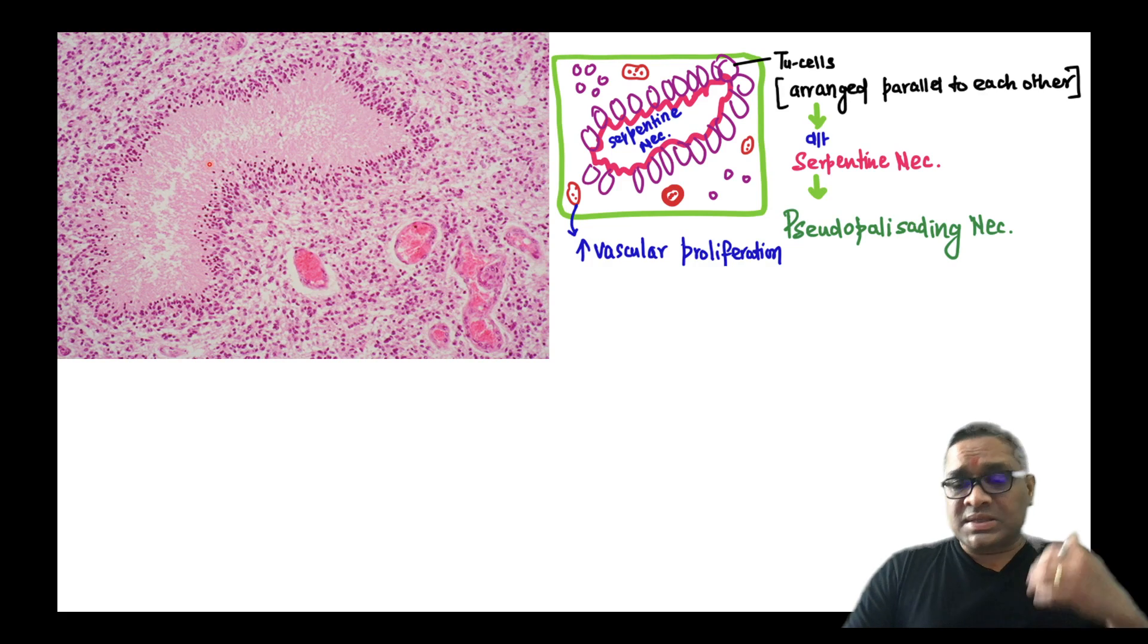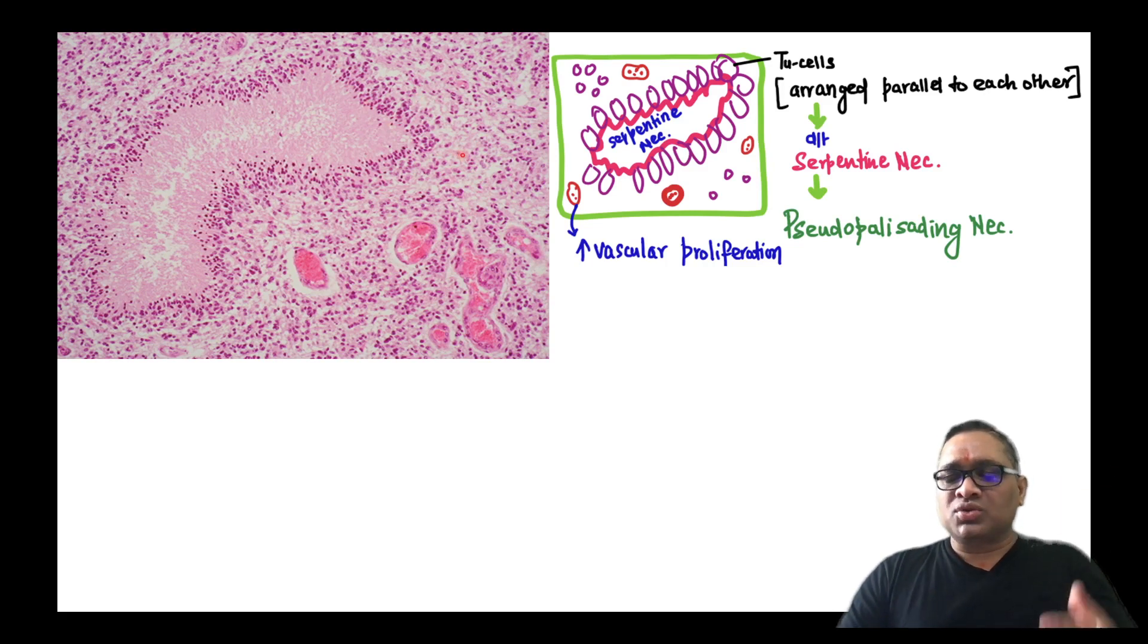What will happen? This serpentine necrosis is going to push the tumor cells. They are pushing the tumor cells at the edges and they are now looking parallel to each other. This parallelism of the tumor cells is because of the necrosis pushing them to the periphery. That is why when tumor cells are arranged parallel to each other due to serpentine necrosis, such pattern is called pseudopalisading necrosis.